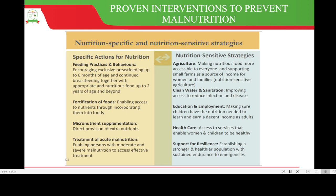The proven interventions to prevent malnutrition include nutrition-specific and nutrition-sensitive strategies. Nutrition-specific actions include feeding practices and behaviors, for example encouraging exclusive breastfeeding up to six months and continued breastfeeding with appropriate nutritious food up to two years and beyond. Also the fortification of food to enable access to nutrients, micronutrient supplementation through direct provision of extra nutrients, and treatment of acute malnutrition to enable persons with moderate or severe malnutrition to access effective treatment.